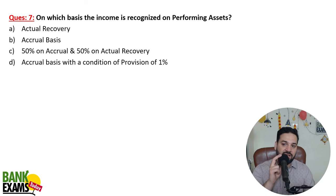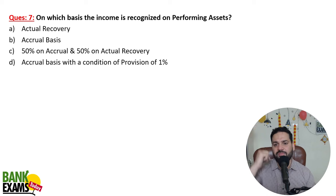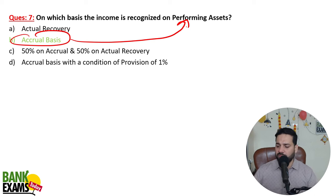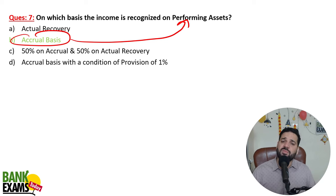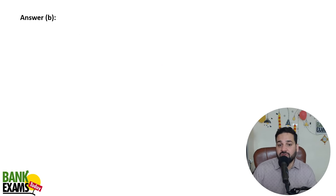On which basis is income recognized on performing assets? On performing assets, it is on accrual basis. On default assets or NPAs, it is on actual basis. If you are repaying your loan on time, the bank assumes you will continue to pay on time and recognizes interest accordingly. But if you default, income is recognized only when actual payment is received.